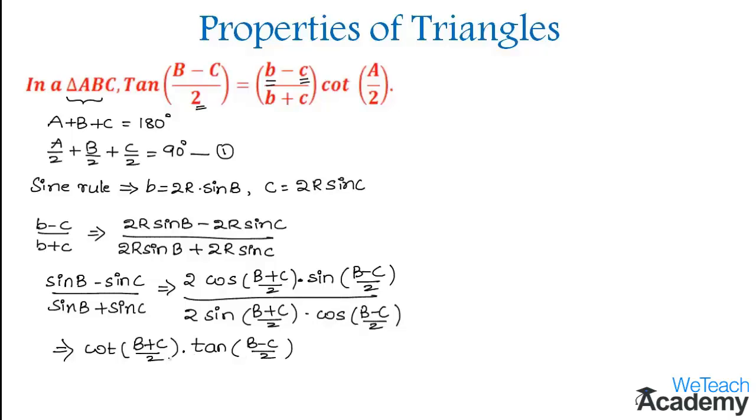By using equation 1, we can replace the value of cot B plus C by 2 with cot 90 degrees minus A by 2. So we get cot 90 degrees minus A by 2 times tan B minus C divided by 2.